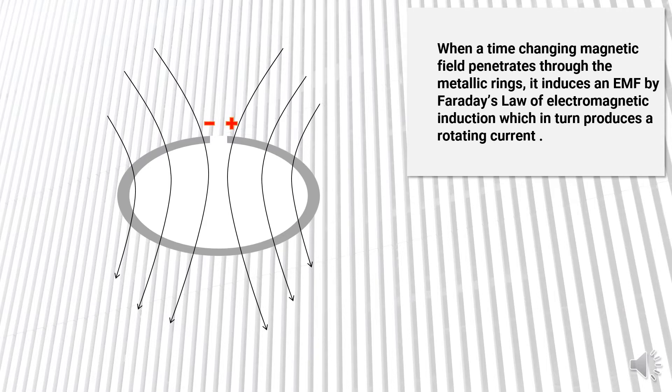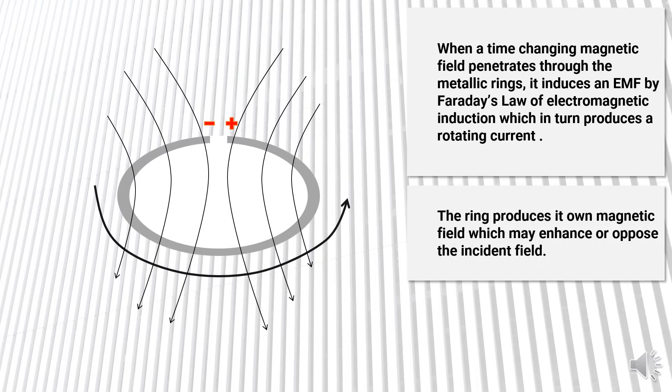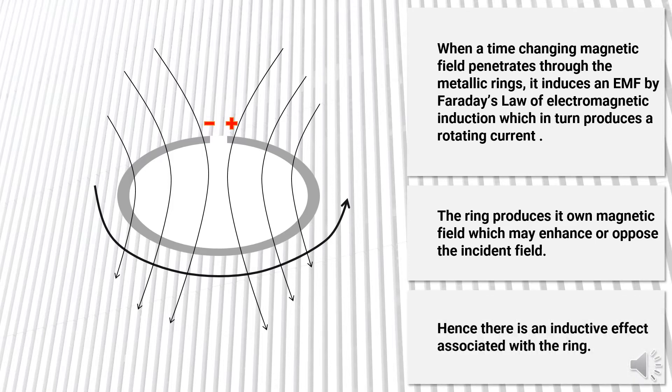This in turn produces a rotating current. Now because of the current, the ring produces its own magnetic field which may enhance or oppose the incident field. What exactly happens depends on the resonant frequency of this ring, which we will discuss a little later. So we can say that there is some inductive effect associated with the ring.